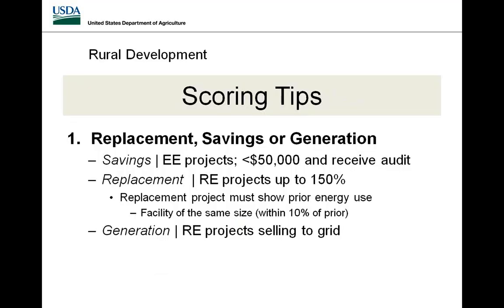The scoring system is a 10-criteria decision-making tool used to rank projects for funding purposes, with a 130-point maximum. Energy efficiency projects get points for the percentage of energy saved of what is currently being used, drawn directly from the audit or energy assessment. You get an additional five points if you provide an audit and your project costs less than $50,000.